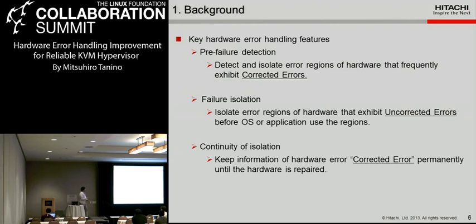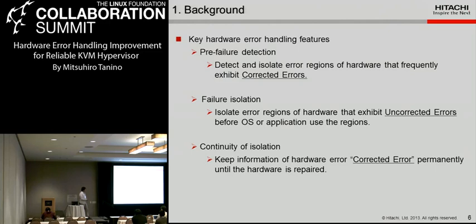There are three key features for hardware error handling. First is pre-failure error detection: detect and isolate error regions of hardware that frequently exhibit corrected errors, since if corrected errors occur frequently the region may likely fail in the future. Next is failure isolation: isolate error regions of hardware that exhibit uncorrectable errors before the OS or application uses those regions, using MCA Recovery. Third is continuity of isolation: keep information of hardware errors such as corrected errors permanently until the hardware is repaired.